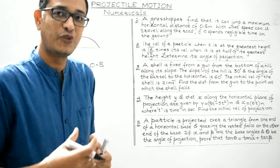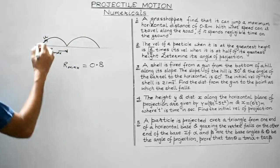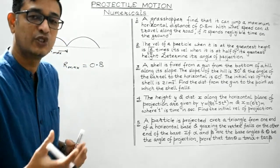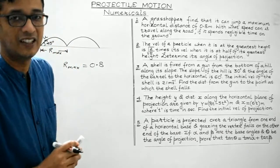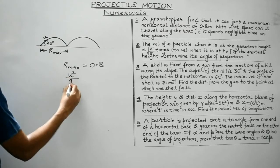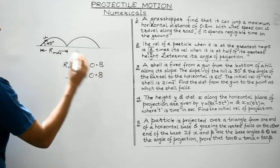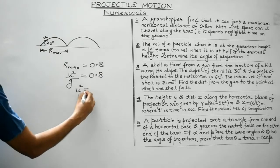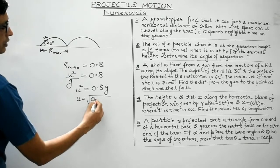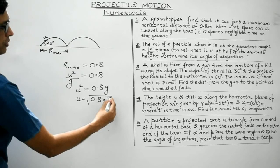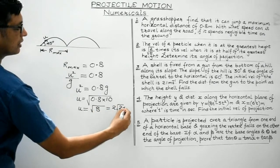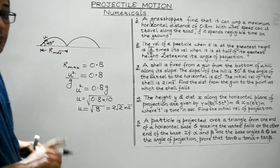We are aware that range will be maximum for an angle of projection of 45 degrees, so this angle must be 45 degrees. That's the first important point — maximum range occurs when the angle of projection is 45 degrees. So r_max equals u² / g = 0.8. Therefore u² = 0.8 × g, and u = √(0.8 × 10) = √8 = 2√2 meters per second.